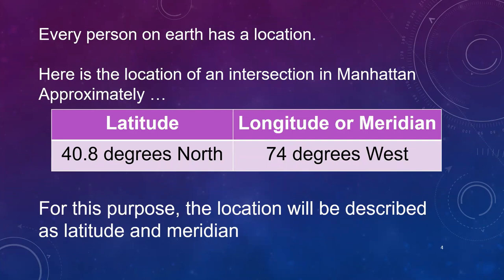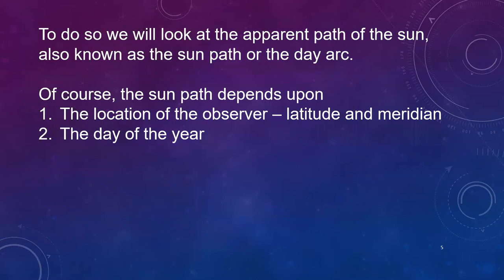First of all, every person on Earth has a location. Here's the location of some intersection in Manhattan. Let's say it's 48.8 degrees north and 74 degrees west. And rather than longitude, we're going to use the term meridian.